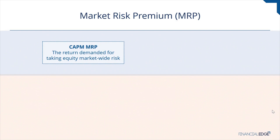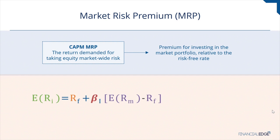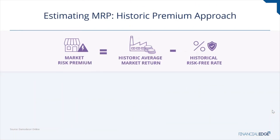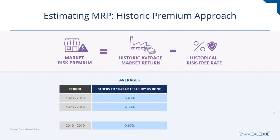The CAPM market risk premium is the return demanded for taking equity market-wide risk, also known as the equity risk premium. Actual returns earned on stocks over a long period of time are calculated and compared to the actual returns earned on a default-free security. Note that even with only three slices of history considered, the premiums can range widely depending upon the choices made — that is, the time period, the average method, the market index, and the risk-free security chosen. It is not surprising, therefore, that equity risk premiums used by analysts reflect this uncertainty with wide differences across analysts.